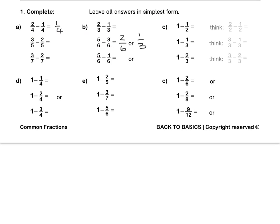Let's look at C. One whole minus a half is a half, because one whole is equal to two halves and two halves minus a half is a half. One whole minus a third: one whole is three thirds, and three thirds minus one third is two thirds. Therefore our answer is two thirds. Lastly, one whole minus two thirds: three thirds minus two thirds is one third. Therefore our answer is one third.